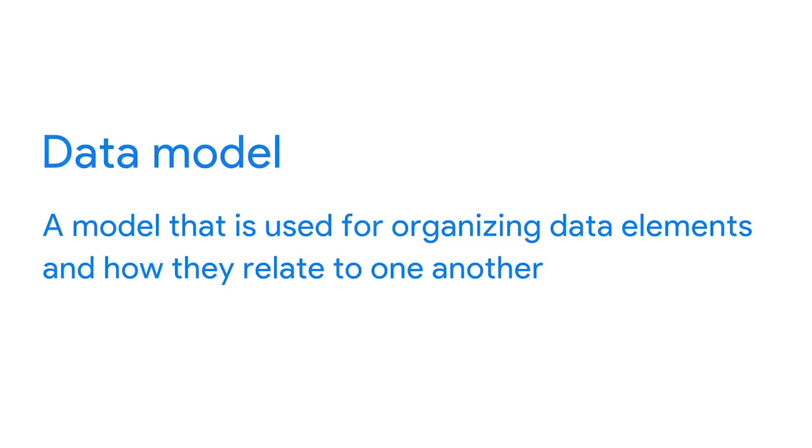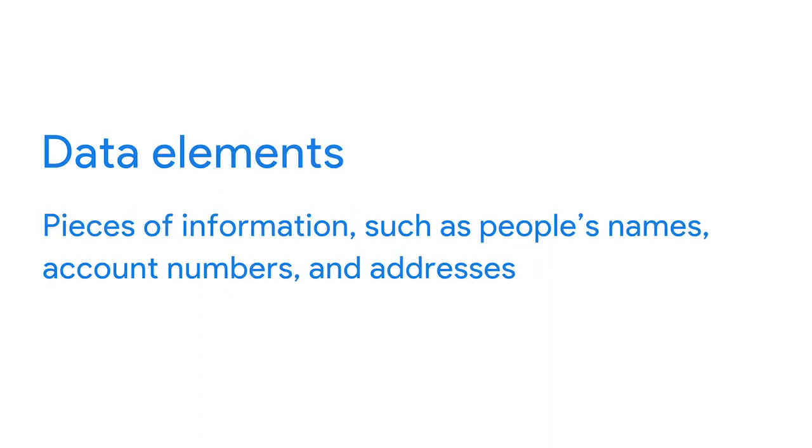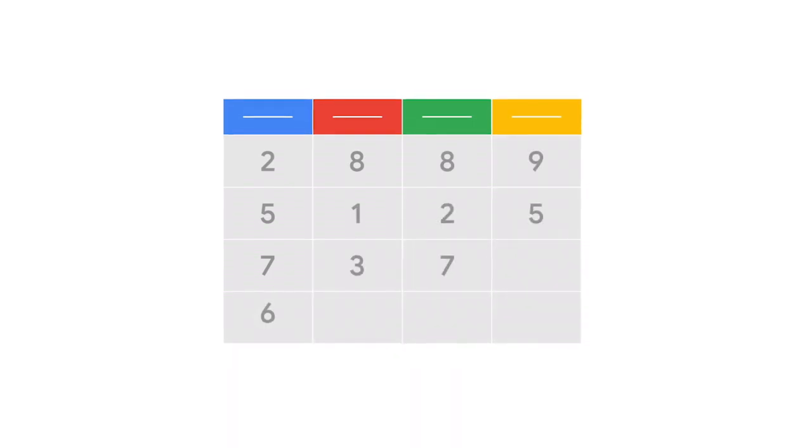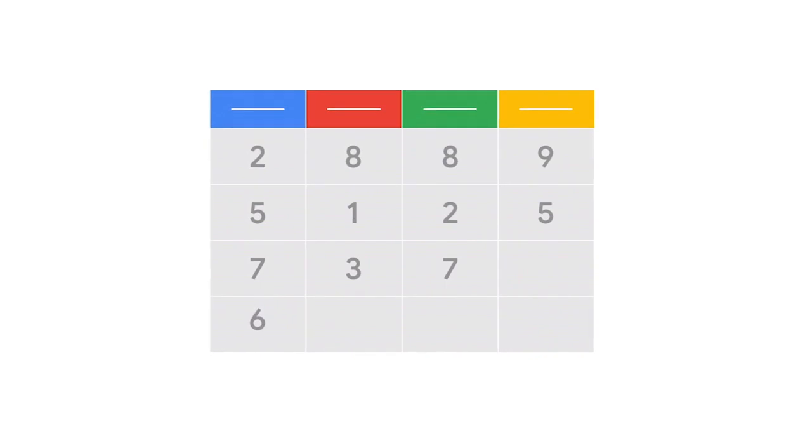I want to explore structured data a bit more. Structured data works nicely within a data model, which is a model used for organizing data elements and how they relate to one another. Data elements are pieces of information, such as people's names, account numbers, and addresses. Data models help to keep data consistent and provide a map of how data is organized — this makes it easier for analysts and other stakeholders to make sense of their data and use it for business purposes. In addition to working well within data models, structured data is also useful for databases, making it easy for analysts to enter, query, and analyze the data whenever they need to.